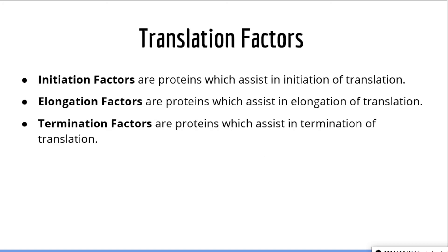Now let's briefly go over the proteins required for translation. There are various translation proteins with complex functions, but you do not need to be familiar with any specific type. They are grouped into three groups based on their function: initiation factors assist in the initiation process, elongation factors assist in the elongation process, and termination factors assist with termination of translation. We will look at the specific ways these proteins assist in translation in the next video.